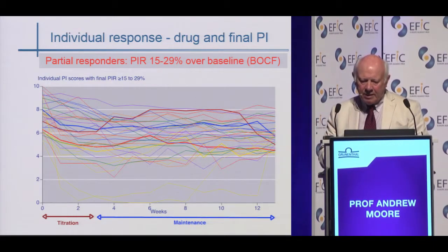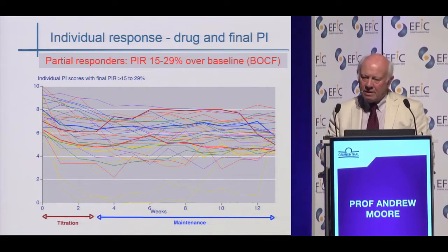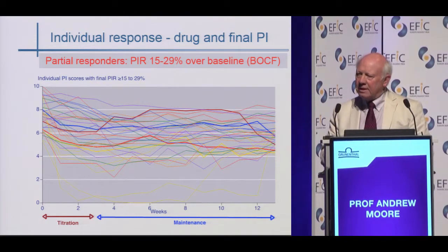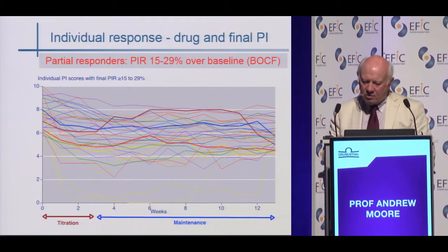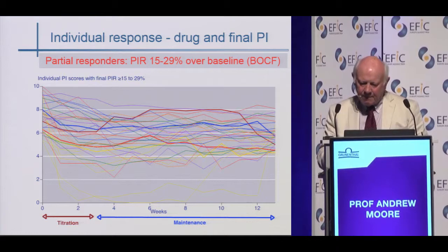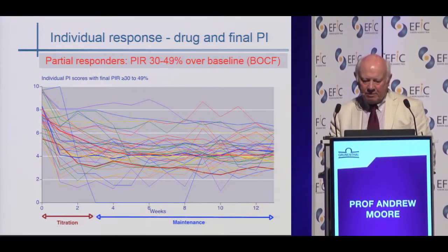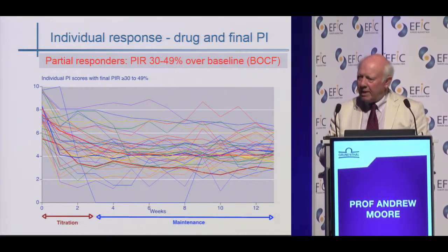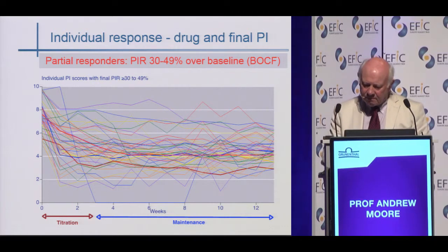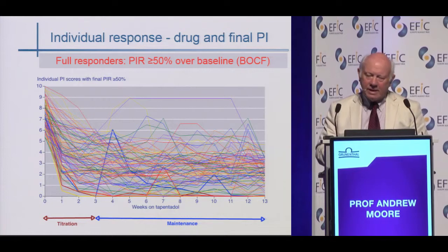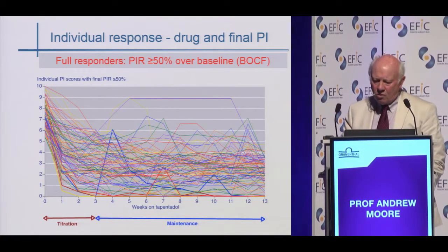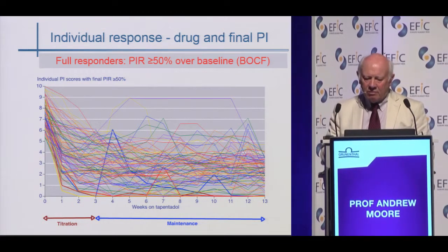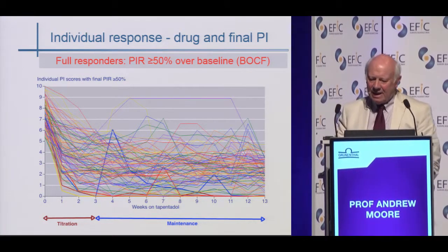Moving the hurdle up to those with a pain intensity reduction of 15 to 29%: there are fewer of them, but you can see a gradual, gentle decline in pain intensity, consistent over the course of the trial, with final pain intensities somewhere between about 4 and 8. Raising the bar again to a final pain intensity reduction of 30 to 49% over baseline, one sees a more rapid initial reduction with pain intensity being maintained over the course of the period, with final pain intensities somewhere between about 3 and 6. And in the full responders — those with pain intensity reduction of 50% or more over baseline at the end of the trial — due to the titration period there is a rapid reduction of pain intensity, and that pain intensity is maintained in most people over the course of the study with one or two excursions.